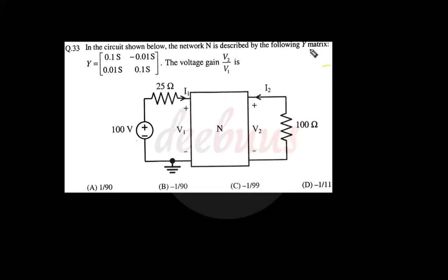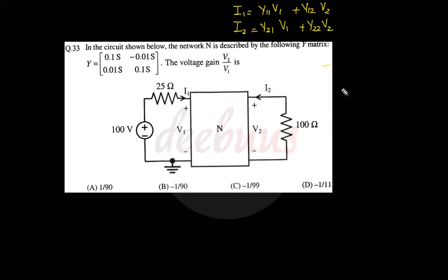Moving to another two-mark question: in the circuit shown below, the network N is described by a Y-matrix, and we have to evaluate the voltage gain V2/V1. From the Y-matrix we write: I1 = y11·V1 + y12·V2 and I2 = y21·V1 + y22·V2. Checking the figure, it is easier to evaluate I2.